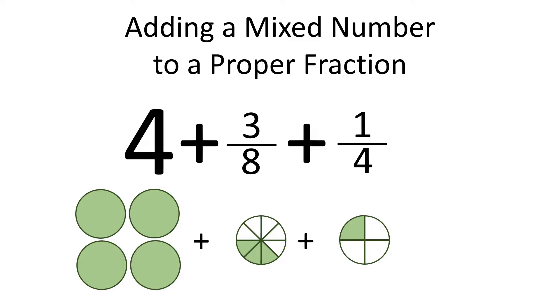The common denominator for 3 eighths and 1 fourth is 8. So then we have 4 plus 3 eighths plus 2 eighths.